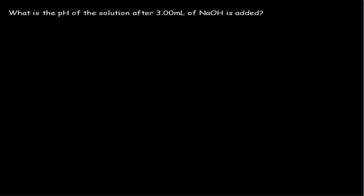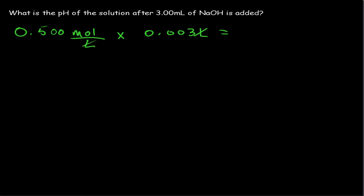From the previous question, the concentration of sodium hydroxide was 0.5 molar, which is the same thing as mole over liter, because molar stands for total moles divided by liters. We have a volume of 0.003 liters. Liters cancel out, and we're simply remaining with the moles of NaOH, which gives us 0.0015 moles NaOH.